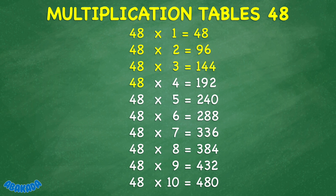48 times 6 equals 288. 48 times 7 equals 336. 48 times 8 equals 384. 48 times 9 equals 432. 48 times 10 equals 480.